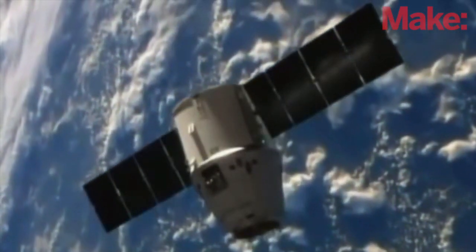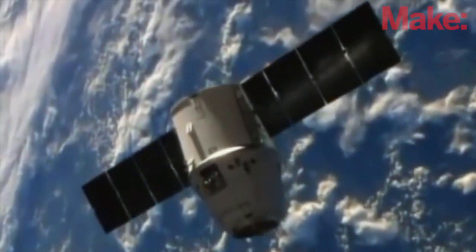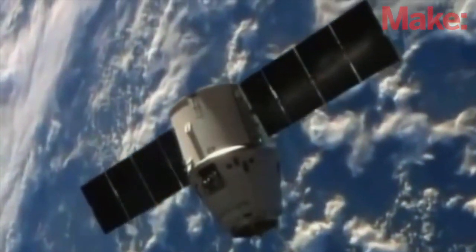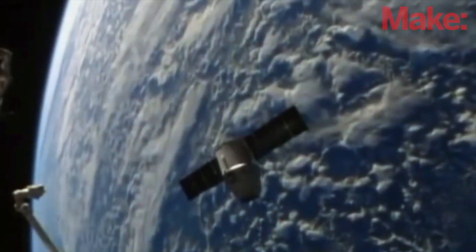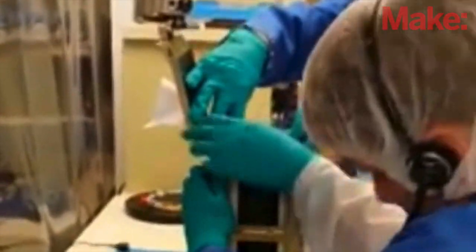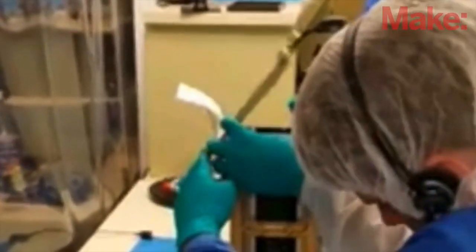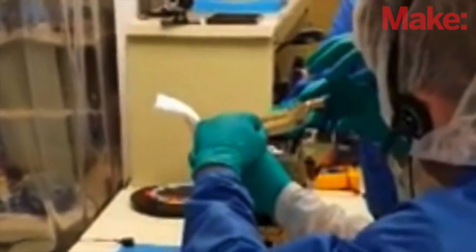So the original KickSat launched aboard SpaceX's CRS-3 mission back in April last year. That was a Falcon 9 launch, an ISS resupply mission that we hitched a ride on. We have these really tiny little spacecraft we call sprites, and we built a mothership for them, which was a satellite roughly the size of a loaf of bread, about 30 by 10 by 10 centimeters, weighing a few kilograms. We packed about a hundred of our little sprites into that mothership satellite, and that's what actually got launched.